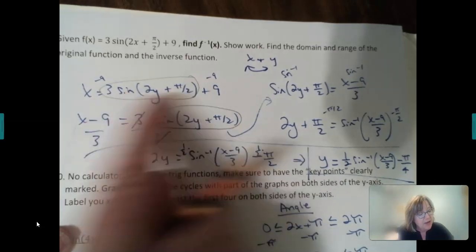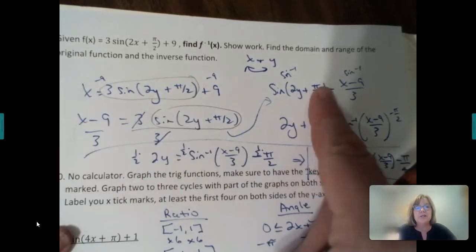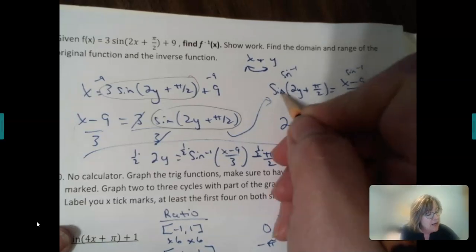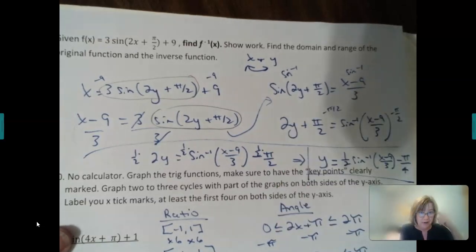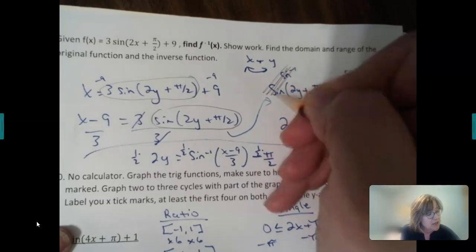Remember all this outside stuff is dealing with the ratio. Now, to get rid of the function, you do the inverse, so to get rid of sine, we do inverse sine, and those cancel.